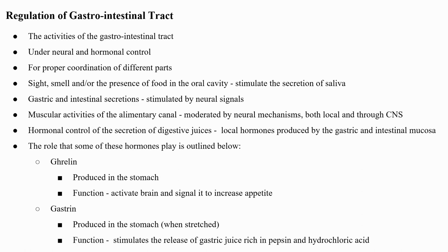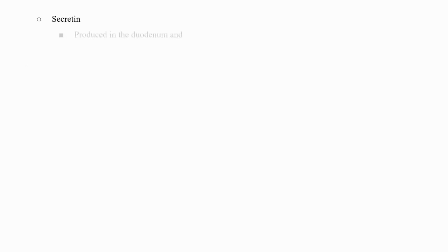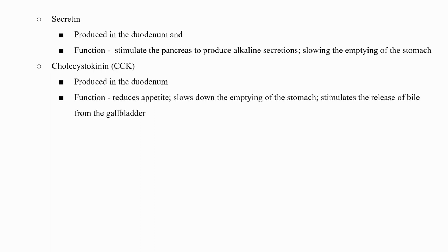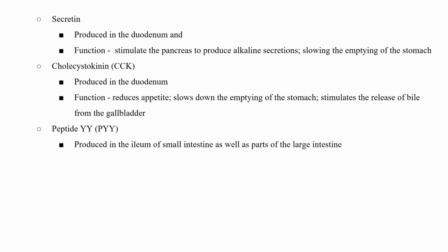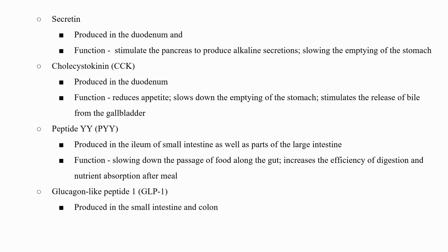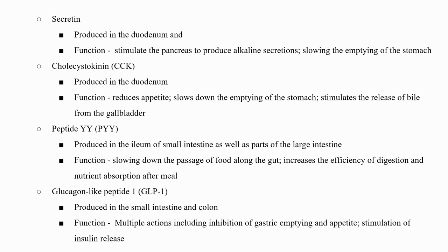Secretin is produced in the duodenum and stimulates the pancreas to produce alkaline secretions as well as slowing the emptying of the stomach. Cholecystokinin (CCK) is produced in the duodenum; it reduces appetite, slows down emptying of the stomach, and stimulates the release of bile from the gallbladder. Peptide YY (PYY) is produced in the ileum and parts of the large intestine; it slows down the passage of food along the gut, increasing the efficiency of digestion and nutrient absorption. Glucagon-like peptide-1 (GLP-1) is produced in the small intestine and colon and has multiple actions including inhibition of gastric emptying and appetite, as well as stimulation of insulin release.